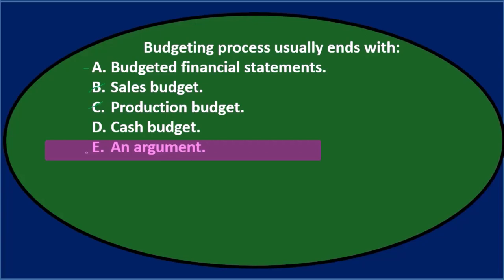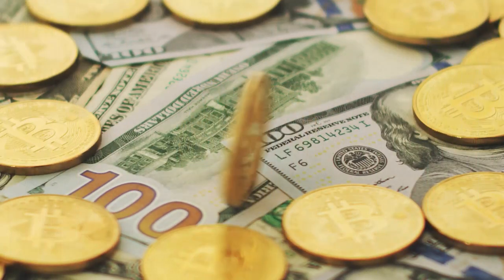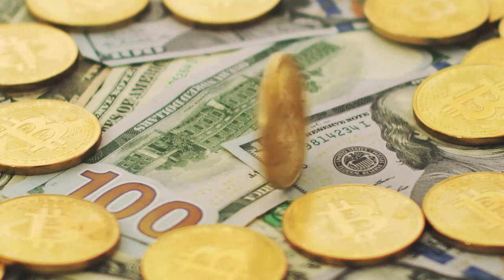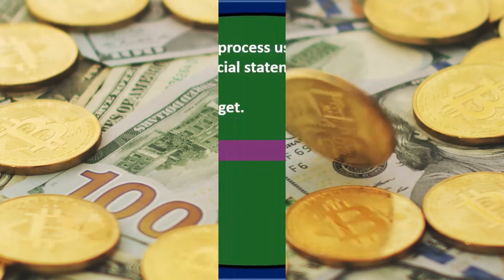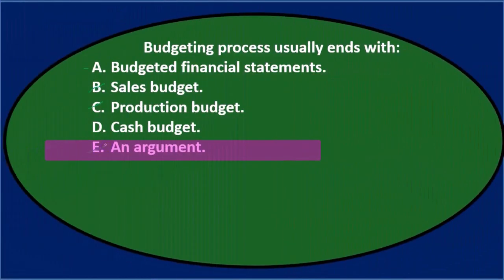E says an argument. Now the arguments hopefully happen during the budgeting process, and by the end of the budgeting process you have squashed or reconciled or at least moved on from all arguments, you would hope. So it's not going to be E. We're left with A and D.